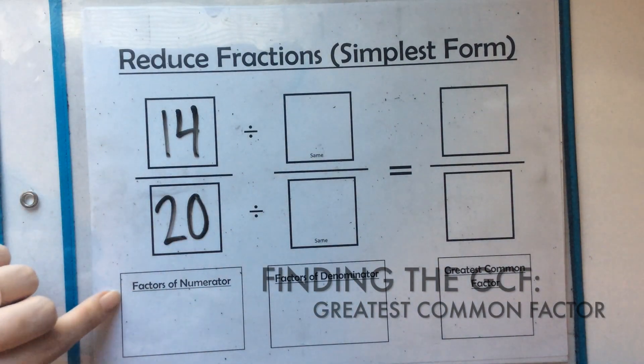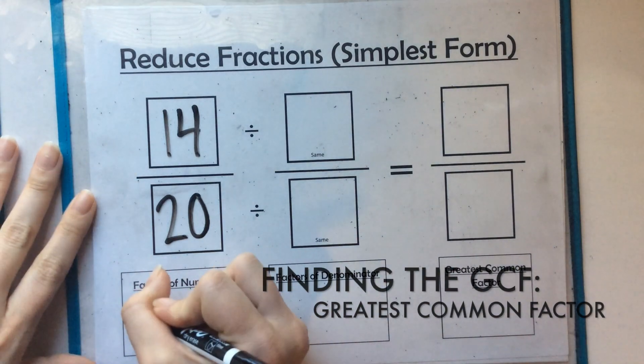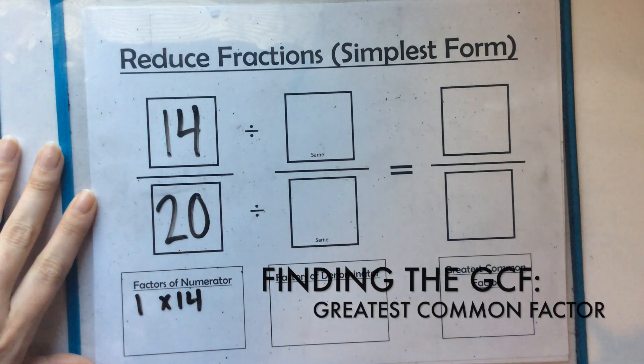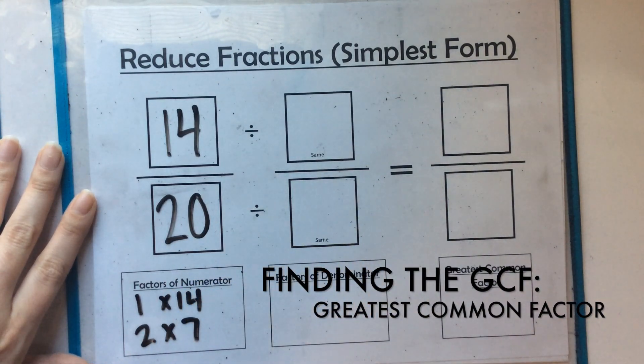So we want to think about the factors of 14. So these are numbers multiplied together to get to 14. So I know 1 times 14 and 2 times 7. And that's it.